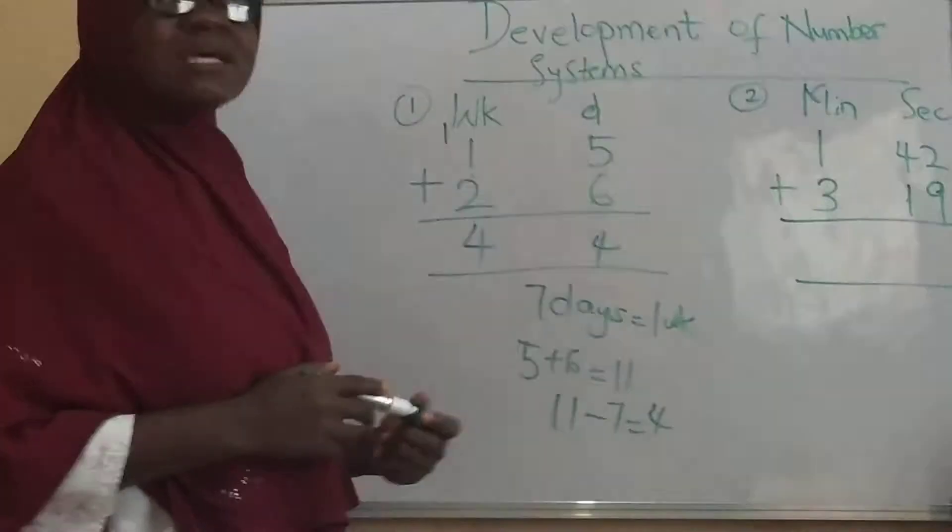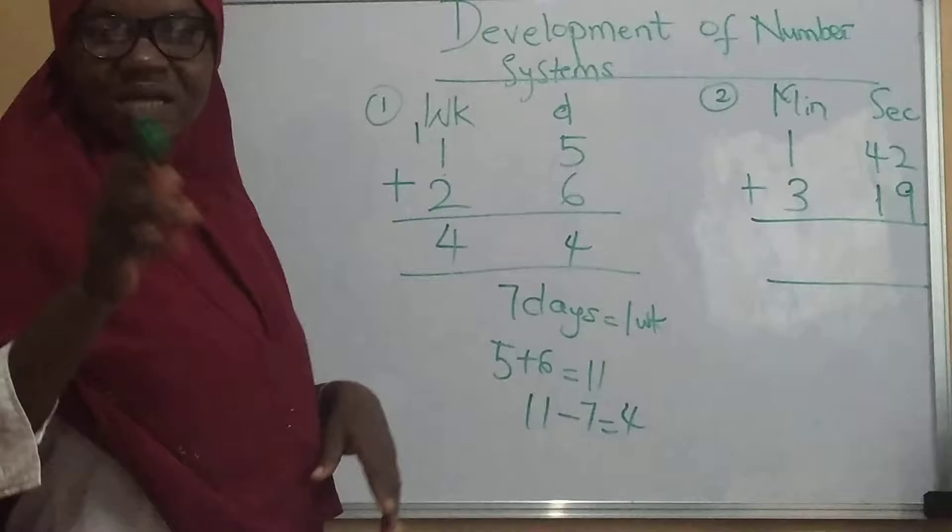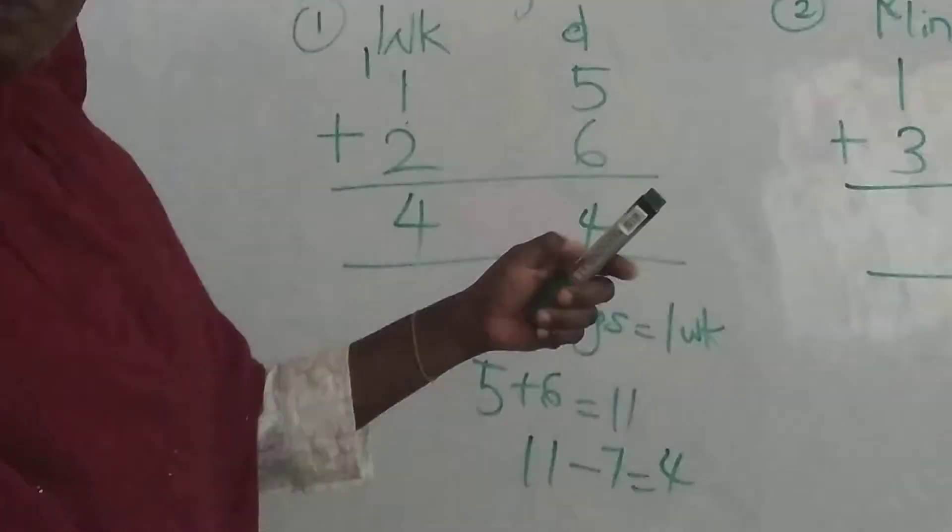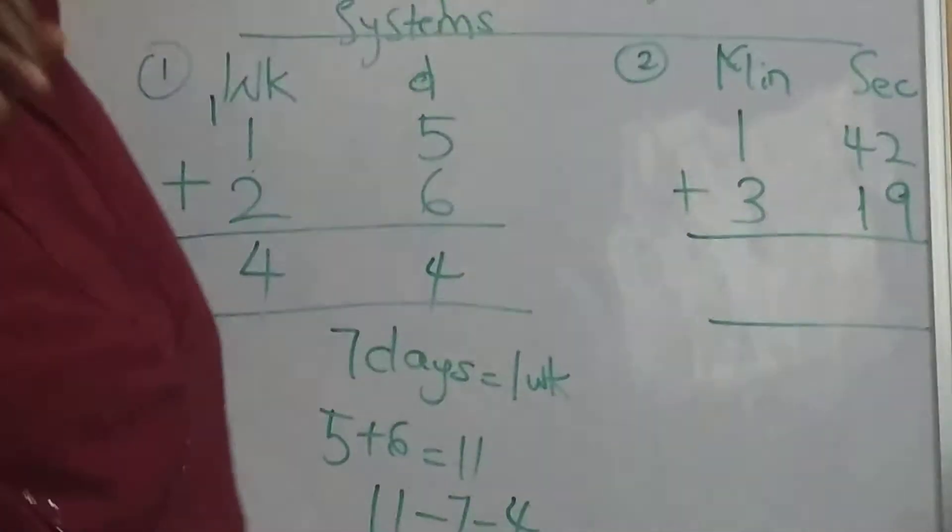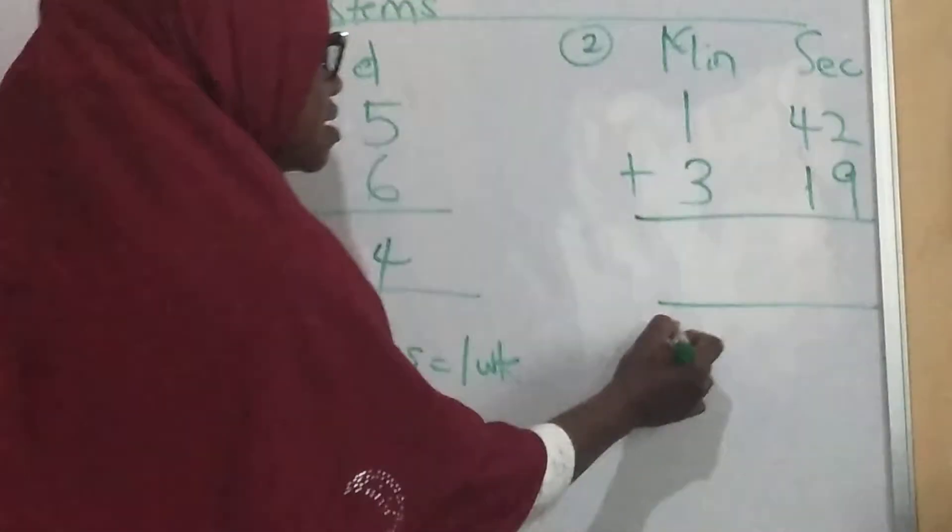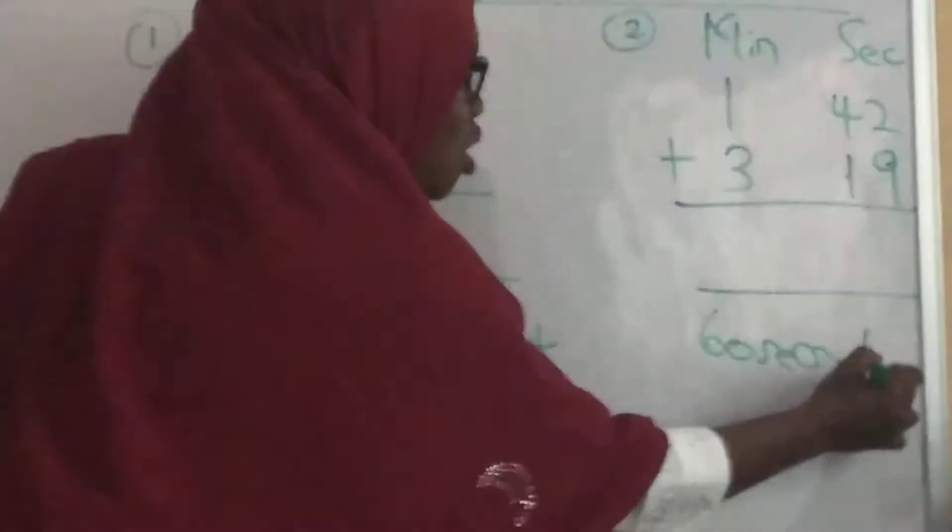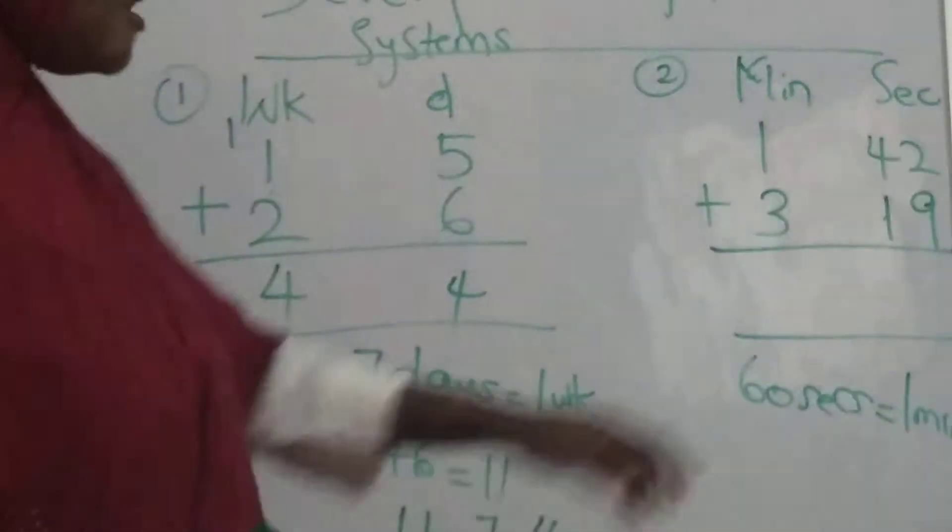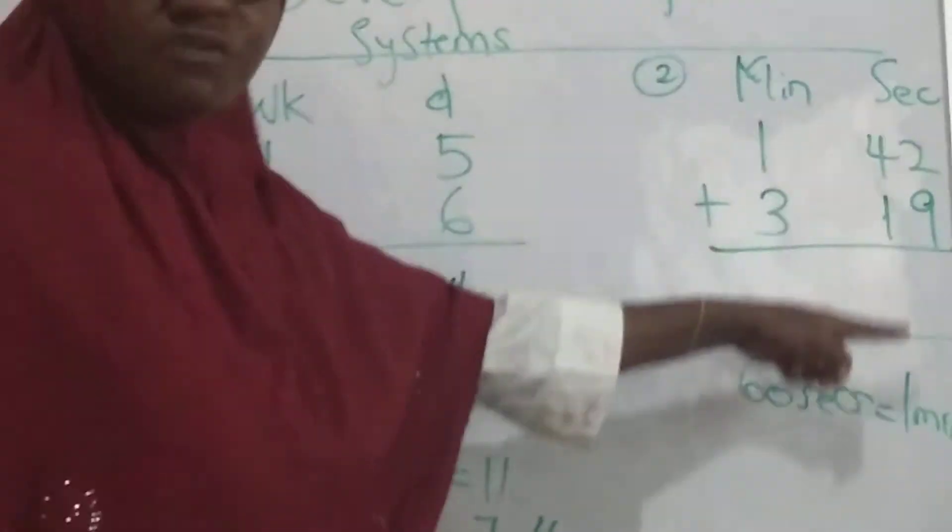Now let's look at this other example. This example is based on minutes and seconds. Now before we can do the addition of this, you need to understand that 60 seconds make one minute. 60 seconds equals to one minute. That means we are going to add all of this together to give you one minute.